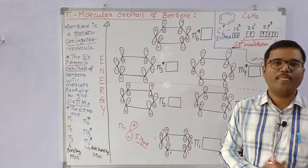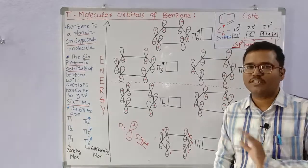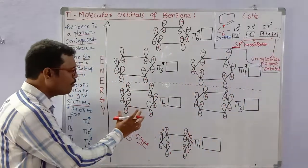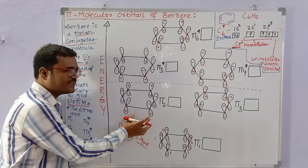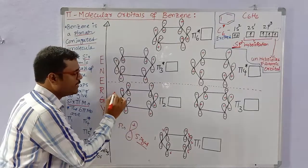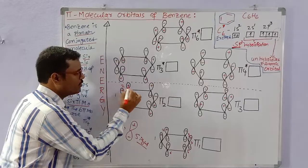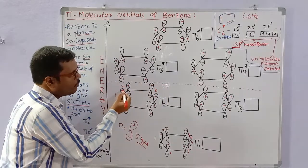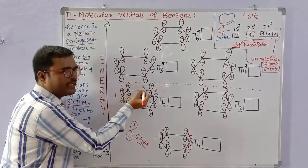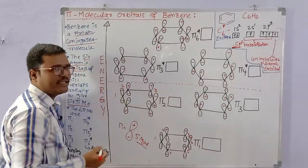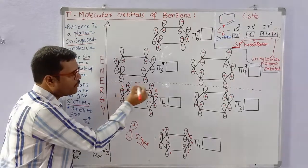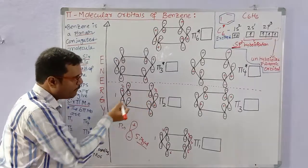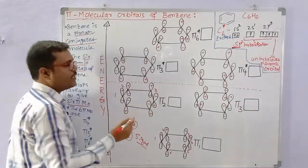In the pi2 molecular orbital formation, carbons 1, 2, and 3 have the top lobe as plus and the bottom lobe as minus — the same sign. However, carbons 4, 5, and 6 have opposite signs.